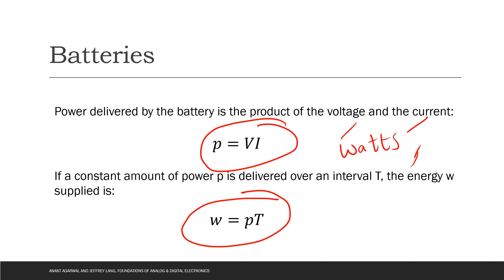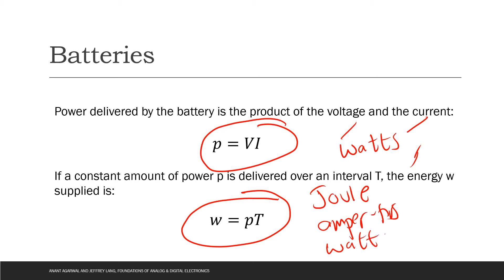The usual units for energy are the following: first we have the joule, then we have ampere-hours, and we also have watt-hours.